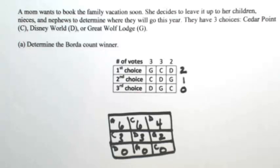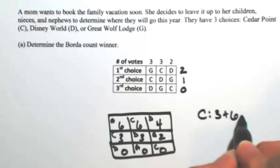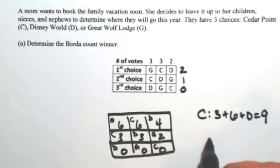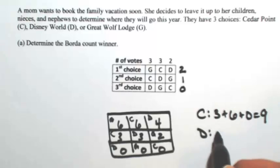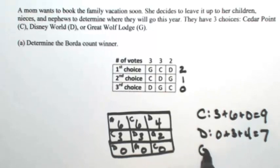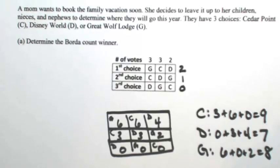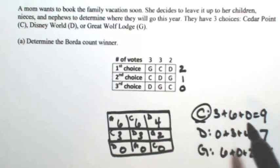Going through and counting up how much each one has: Cedar Point has three, six, and zero. Disney World has zero, three, and four. Great Wolf Lodge has six, zero, and two. The Borda count winner is the one with the most points, so that's Cedar Point.